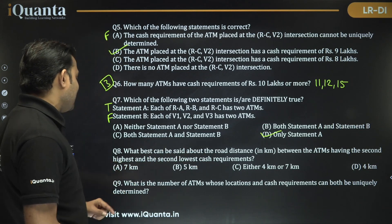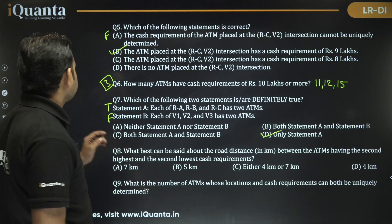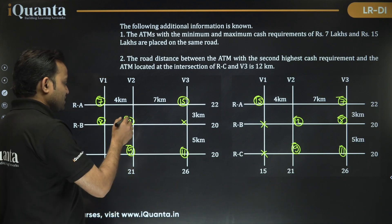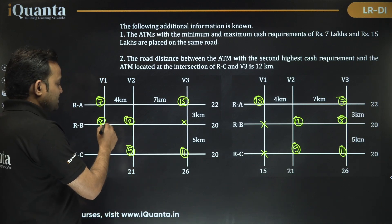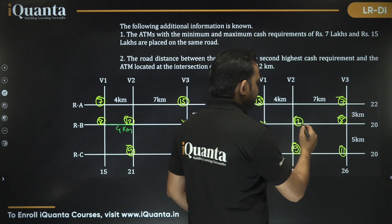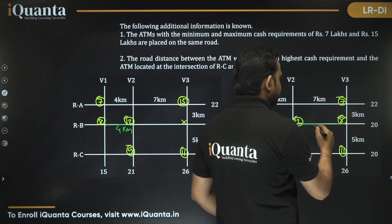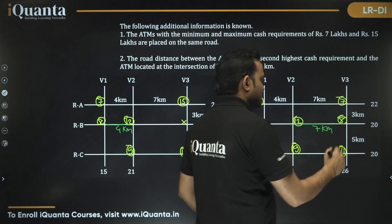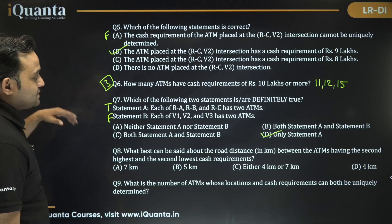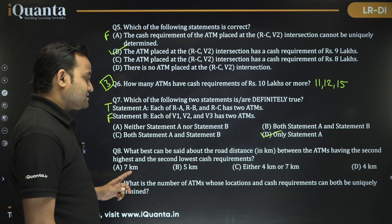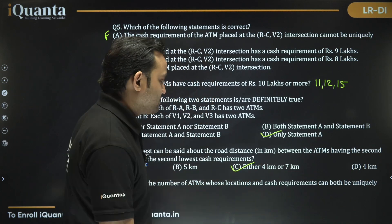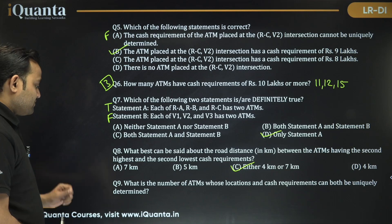Question 8: What is the road distance between the ATMs with the second highest and second lowest cash requirements? The second lowest is 8 lakhs, and the second highest is 12 lakhs. In Case 1, the distance between them is 4 km; in Case 2, it is 7 km. So the answer is option C: either 4 km or 7 km.